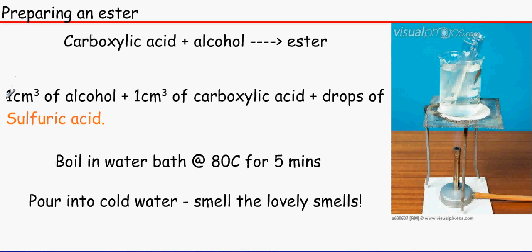We need one centimeter cubed of alcohol, which is the same as one milliliter of alcohol, plus one centimeter cubed of carboxylic acid plus a few drops of sulfuric acid. The sulfuric acid is used as a catalyst because this reaction will be too slow to perform on its own, so we use the sulfuric acid to speed up the rate of reaction and lower the activation energy.